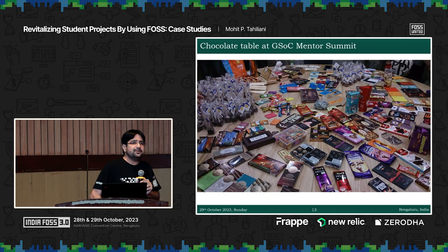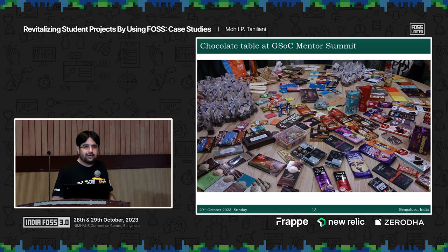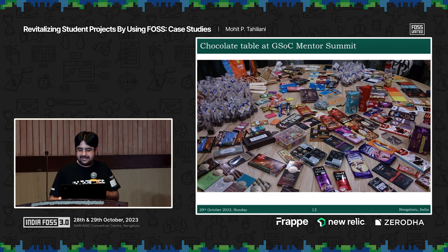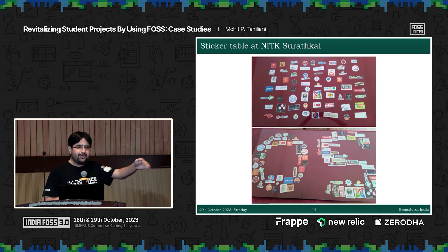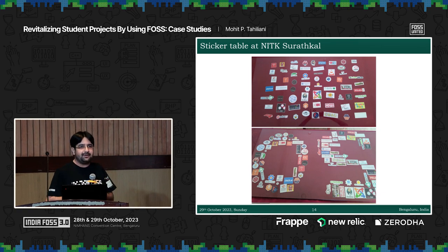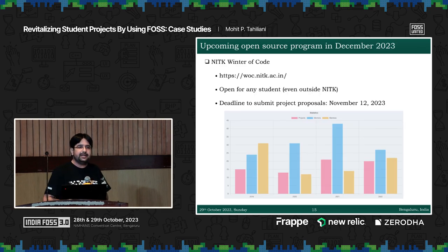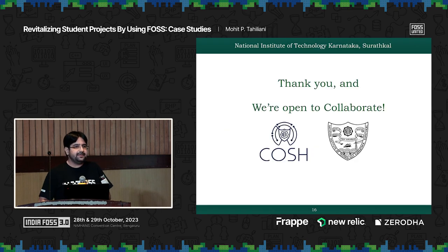Here are some snapshots since we are at the open source conference. I keep visiting the GSoC mentor summit — I am a GSoC mentor. Next year I would request India FOSS to have a chocolate table where anyone can grab chocolates. We have a sticker table at NITK — if you ever visit NITK, give me a call and we'll be happy to host you. We collect a lot of stickers, and I was running around this morning collecting stickers here. We also have an open program for any student outside NITK called NITK Winter of Code, running for four editions now. You can apply if you're interested. We are open to collaborate.